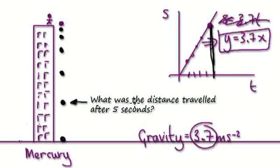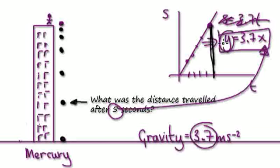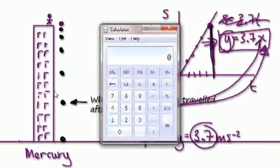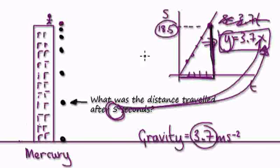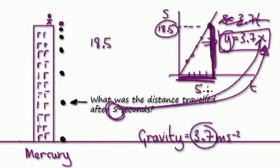If you put 5 into the equation, that will give you y, which represents the height on the speed-time graph. So the height — put the 5 in here. 3.7 times 5 equals 18.5. So this point here is 18.5 — the speed after 5 seconds is 18.5. Then the height here is 18.5, and times the across here which is 5 seconds.